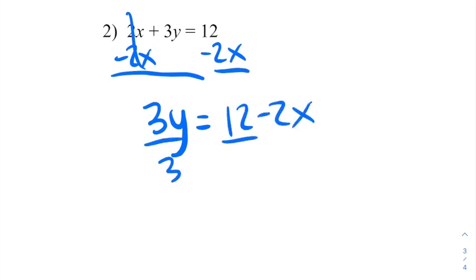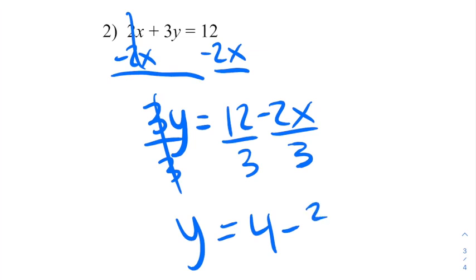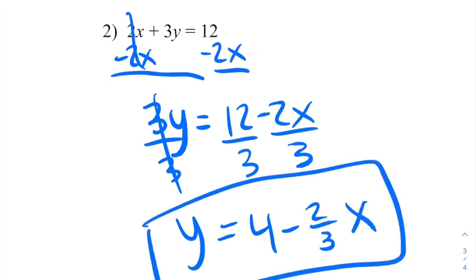And then I divide every part by 3 to get y alone. That leaves us with y equals 4 minus 2 thirds x. And that's our final answer.